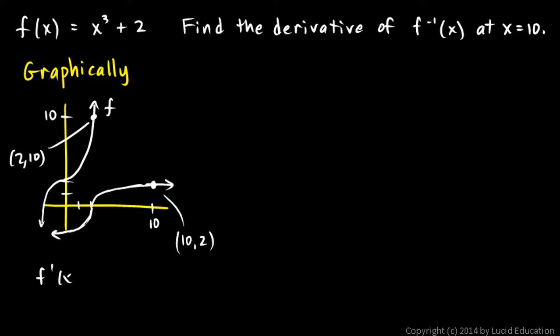f primed of x, that's easy. Just take the derivative of that. That's 3x squared. And find f primed, the slope right here at an x value of 2. So let's find f prime of 2. And that's easy. That's just 3 times 2 squared, which is 12.